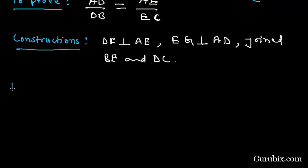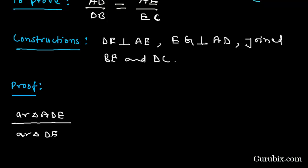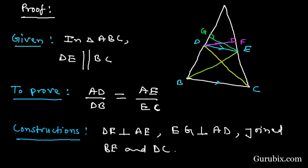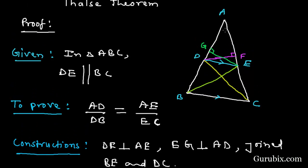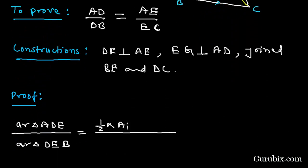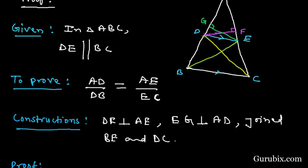Now we shall start proving the theorem. We start with the ratio of the areas of triangle ADE and triangle DEB. The area of a triangle is (1/2) × base × height. If EG is the perpendicular, then AD is the base. For triangle DEB, EG is also the perpendicular and DB is the base.